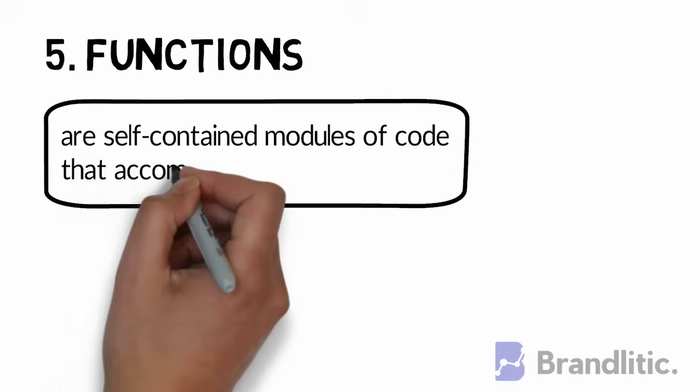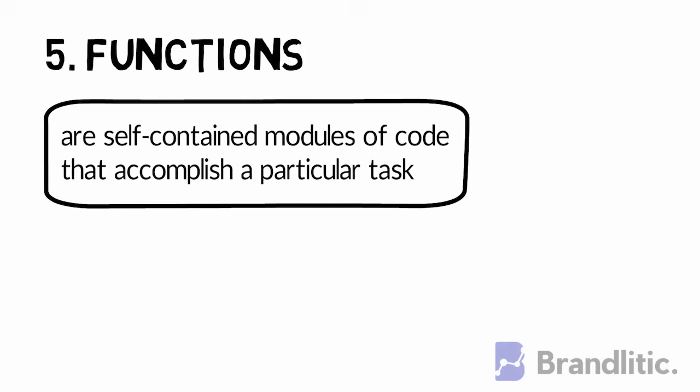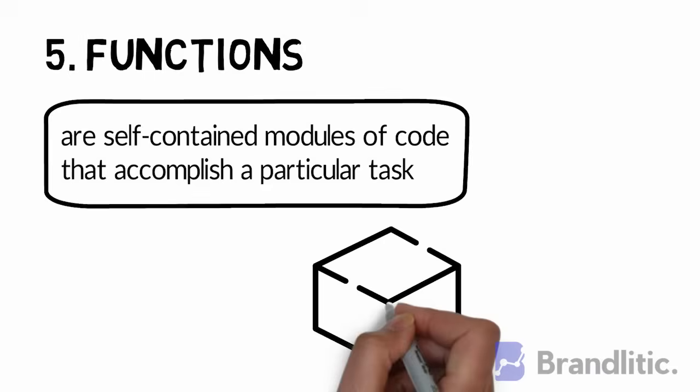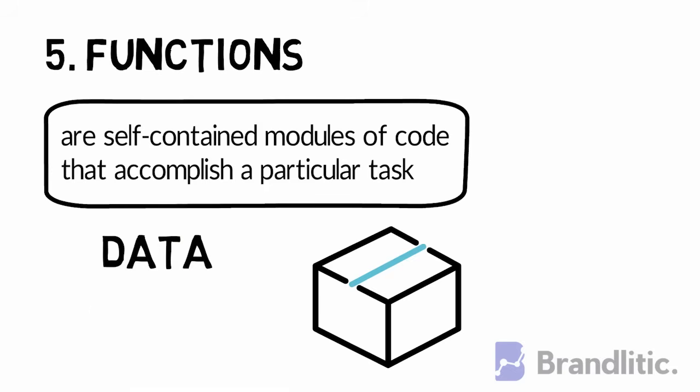5. Functions. Functions are self-contained modules of code that accomplish a particular task. Once a function is written, it can be called and used again and again. They operate like a black box. Data goes in, function operates on the data, and process data comes out.